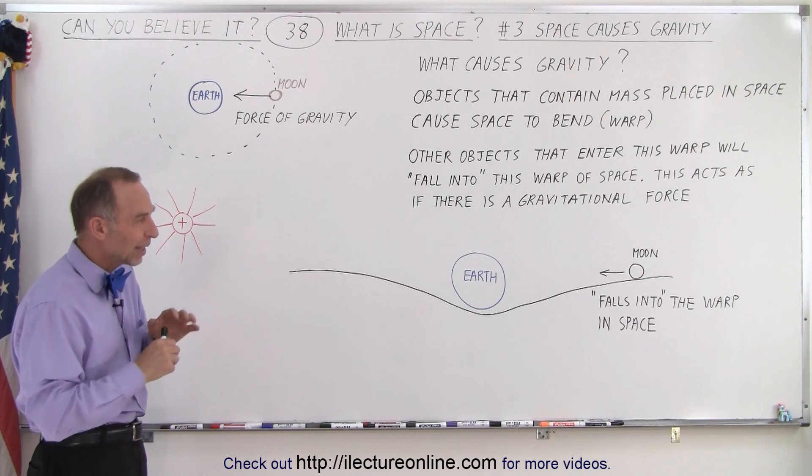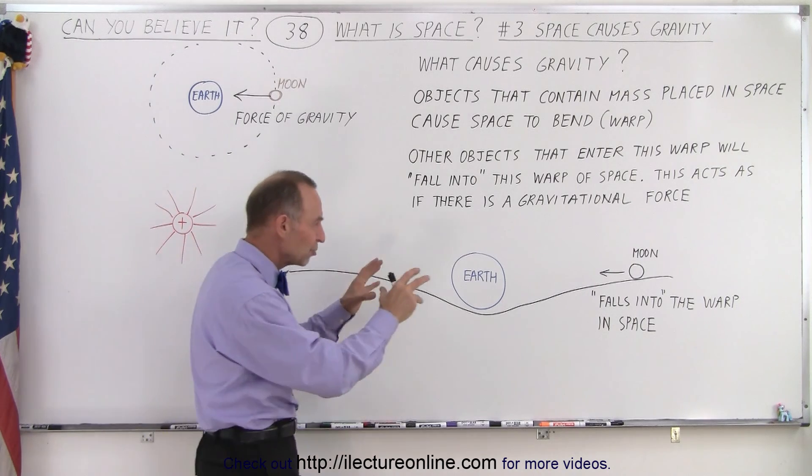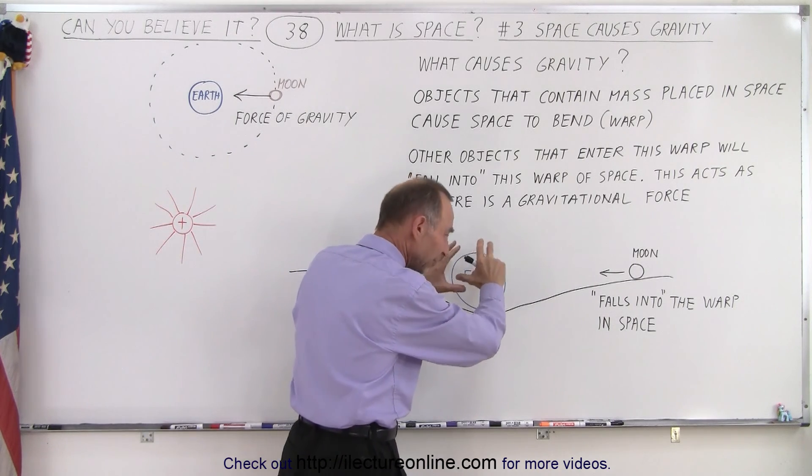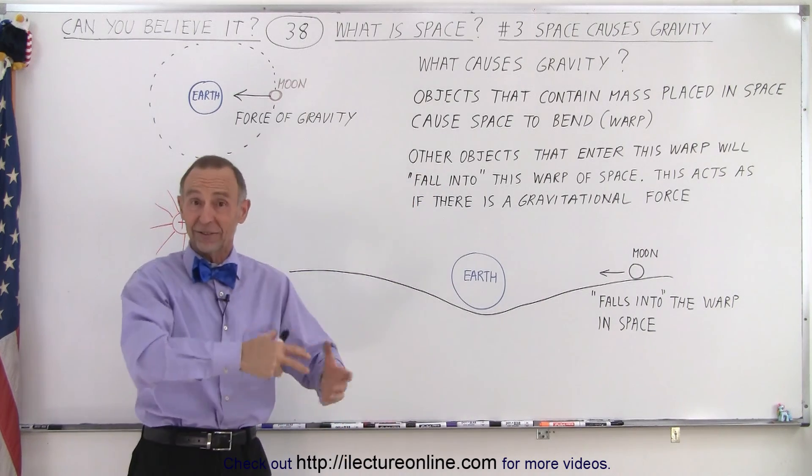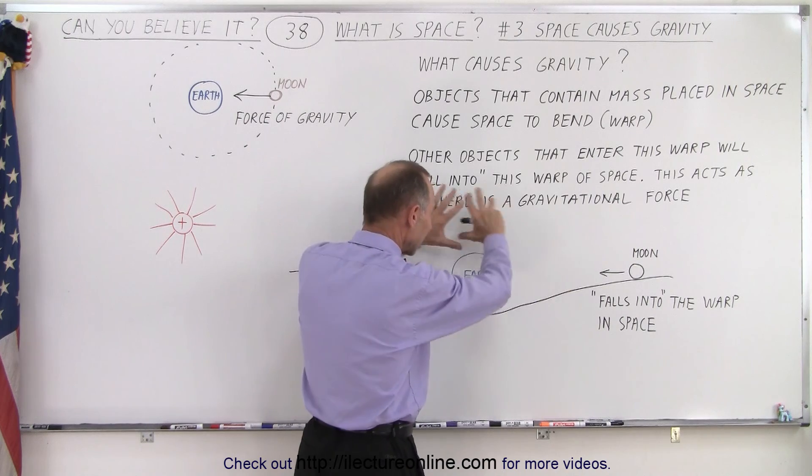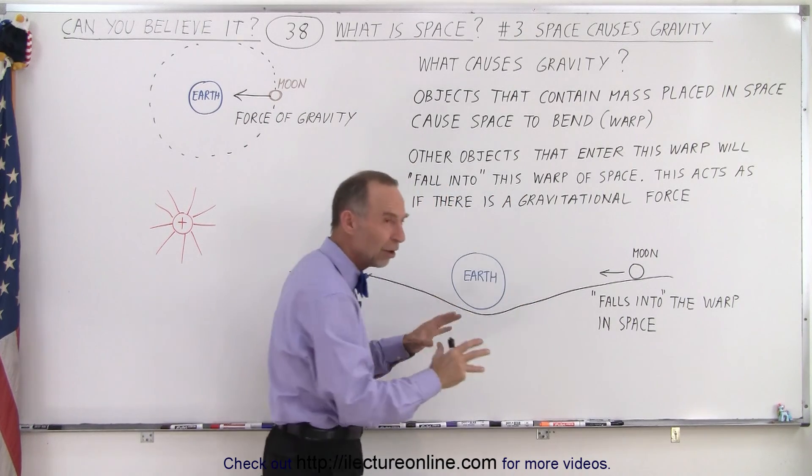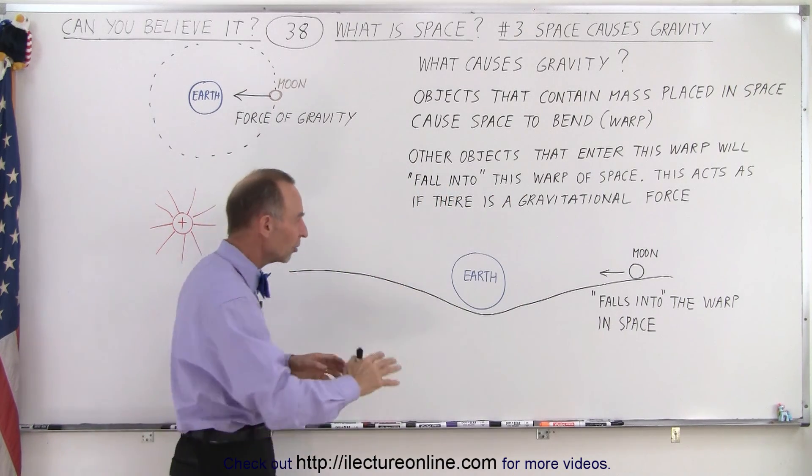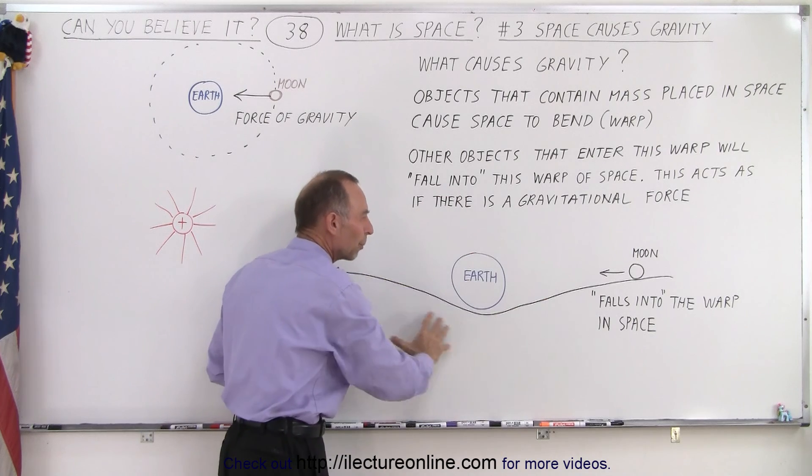And he began to realize that when you place an object, as big an object as the earth, in space, of course we don't have to place it there, it's already there, but it causes something to happen around that object, around the earth, to space. Something is changing. It causes space to warp or bend.